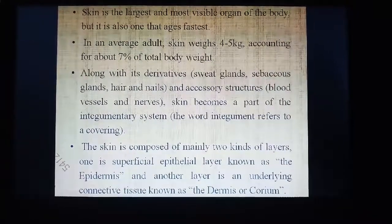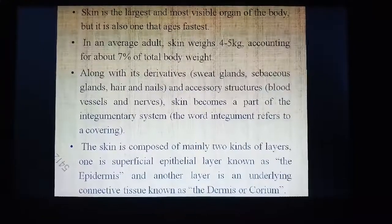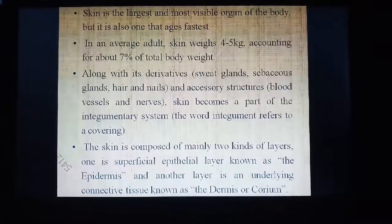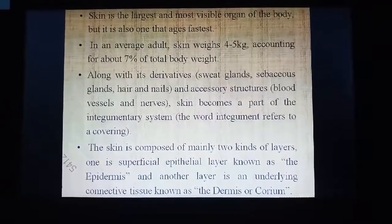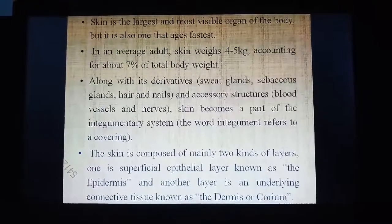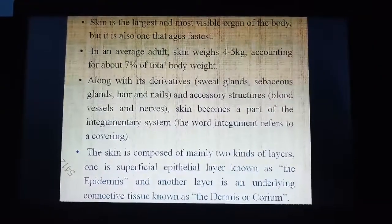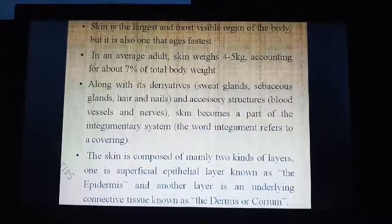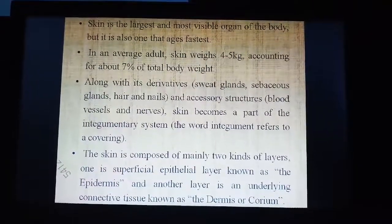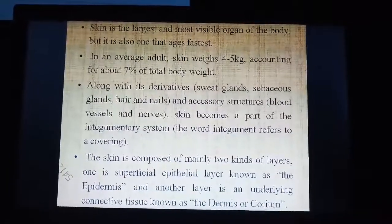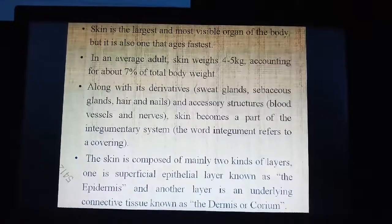The skin is the largest and most visible organ of the body, and also the one that ages fastest. In an average adult, the weight of the skin is about four to five kilograms, accounting for approximately seven percent of the total body weight. Along with its derivatives and accessory structures like sweat glands, sebaceous glands, hairs, nails, blood vessels, and nerves, the skin forms part of the integumentary system. The word integument refers to a covering.